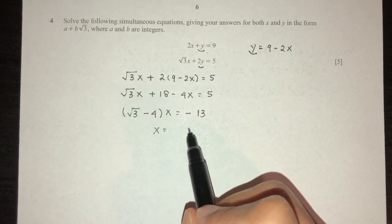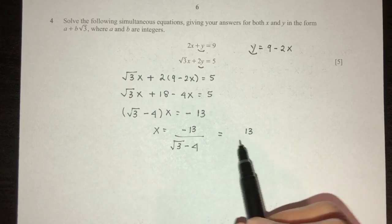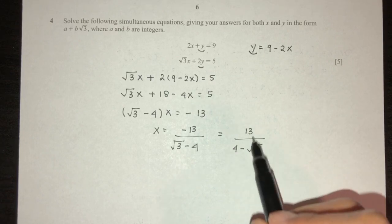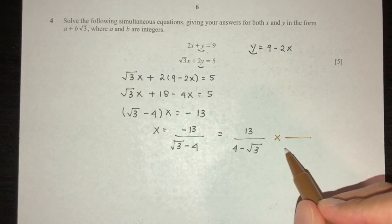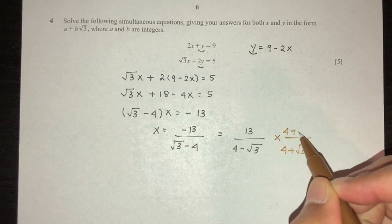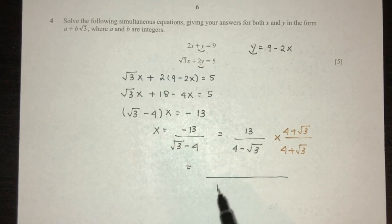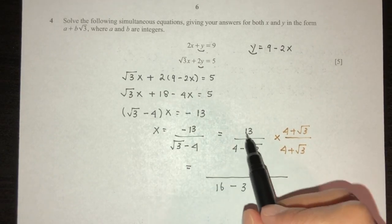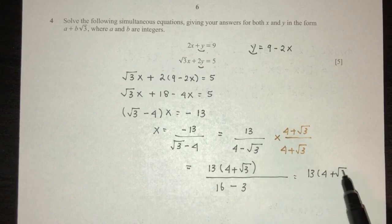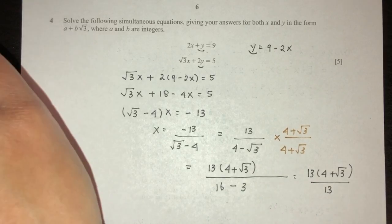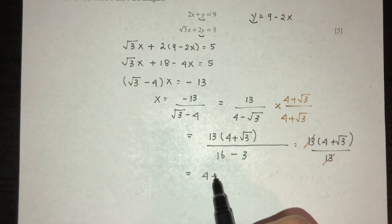So x = −13 / (√3 − 4), or equivalently 13 / (4 − √3). Rationalizing by multiplying by the conjugate: the denominator becomes 16 − 3 = 13. The numerator becomes 13(4 + √3). The 13s cancel, giving x = 4 + √3.